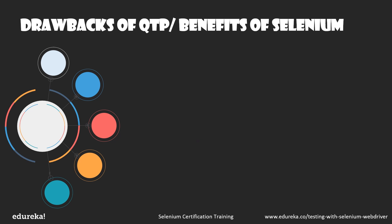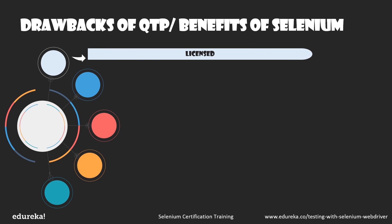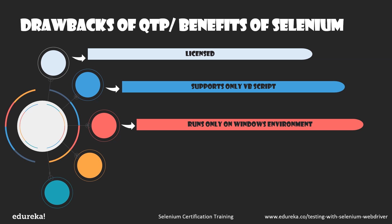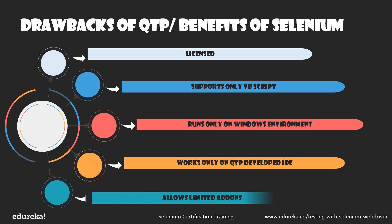Now let's understand the benefits of Selenium over QTP. QTP is licensed and the cost is very high. It supports only VBScript, so test scripts cannot be written in Java, Python, or other languages. It can only run on Windows and does not provide support across all browsers. QTP does not support functioning across different IDEs and works only on its own developed IDE. It also allows only limited add-ons, and parallel testing in QTP requires Quality Center, which is again a paid HP product.